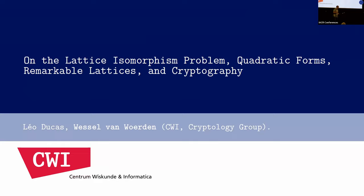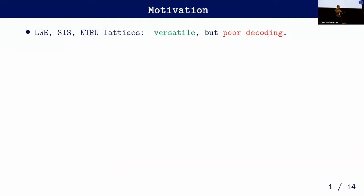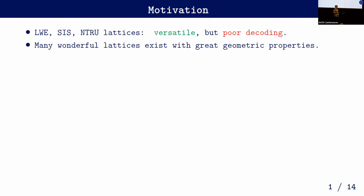Let's start with some motivation. If we look at the current landscape of lattice-based crypto, it's almost always based on either the LWE assumptions or SIS or NTRU-related assumptions. The lattices that you get, while very versatile — you can do a lot of crypto with them — have rather poor decoding properties. At the same time, many wonderful lattices exist with great geometric properties, and the question is: can we use these in cryptography?